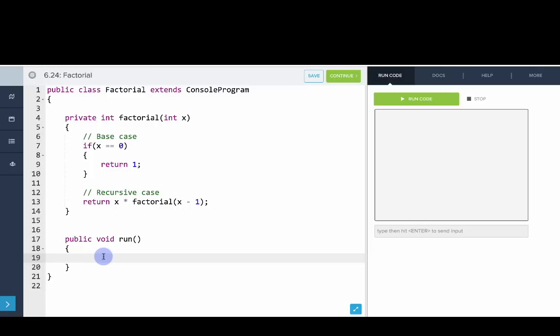Now we can test this out in our run method. So we'll say for int i equals 0, i is less than 8, i plus plus. And we'll print out factorial of i. So there you go.